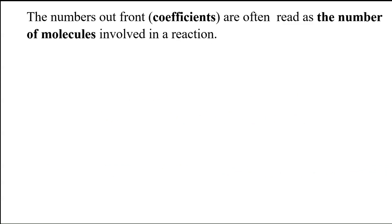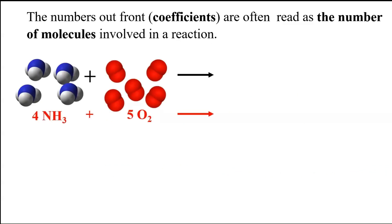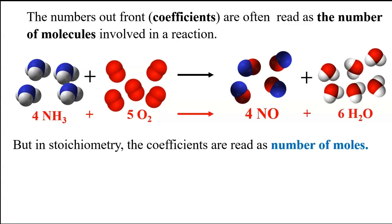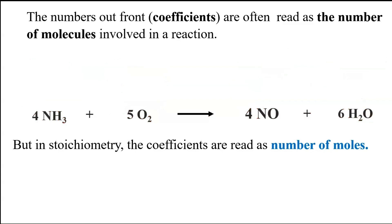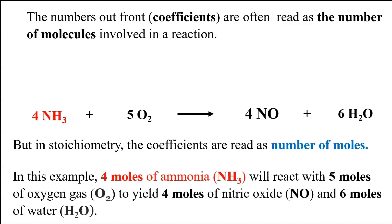So the numbers out front, which are the coefficients, are often read as the number of molecules involved in a reaction. Very often in chemistry books, depending on the topic, the interpretation will be the number of molecules. But in stoichiometry, the coefficients are read as the number of moles. That's an important thing in interpreting stoichiometry. So it says in this example, four moles of ammonia will react with five moles of oxygen gas to yield four moles of nitric oxide and then six moles of water.